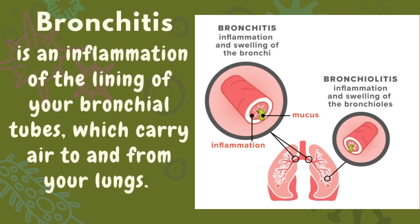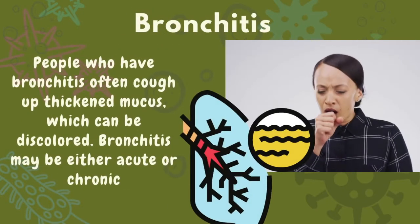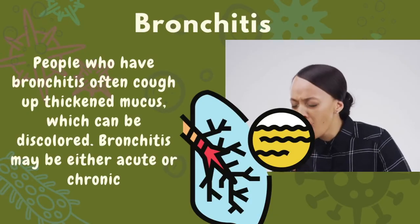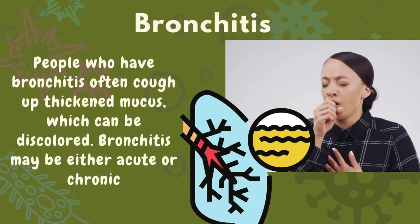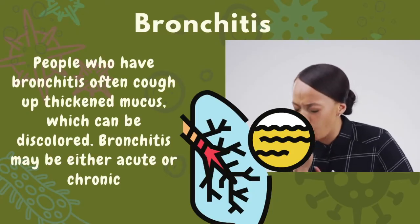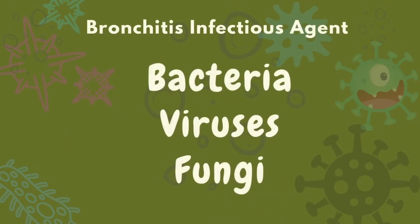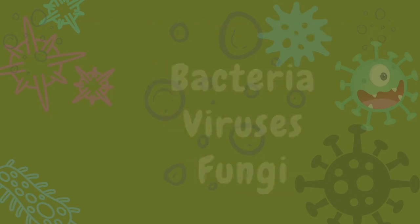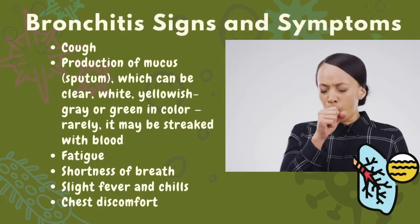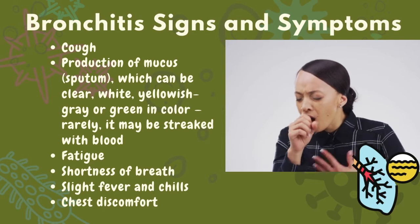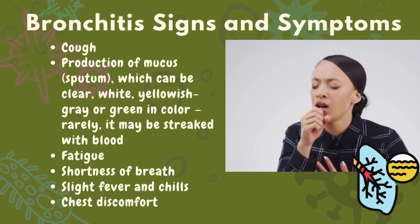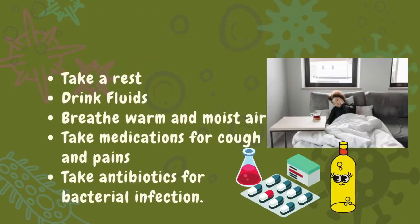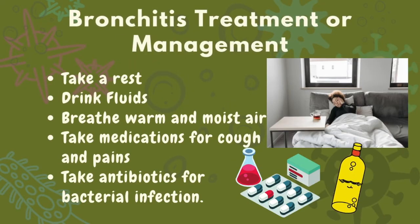Bronchitis is the inflammation of the lining of the bronchial tubes. People who have bronchitis often cough up thickened mucus, which can be discolored. Bronchitis may be either acute or chronic. The infectious agents are bacteria, viruses, and fungi. These are the signs and symptoms for bronchitis, and here is how it is treated or managed.